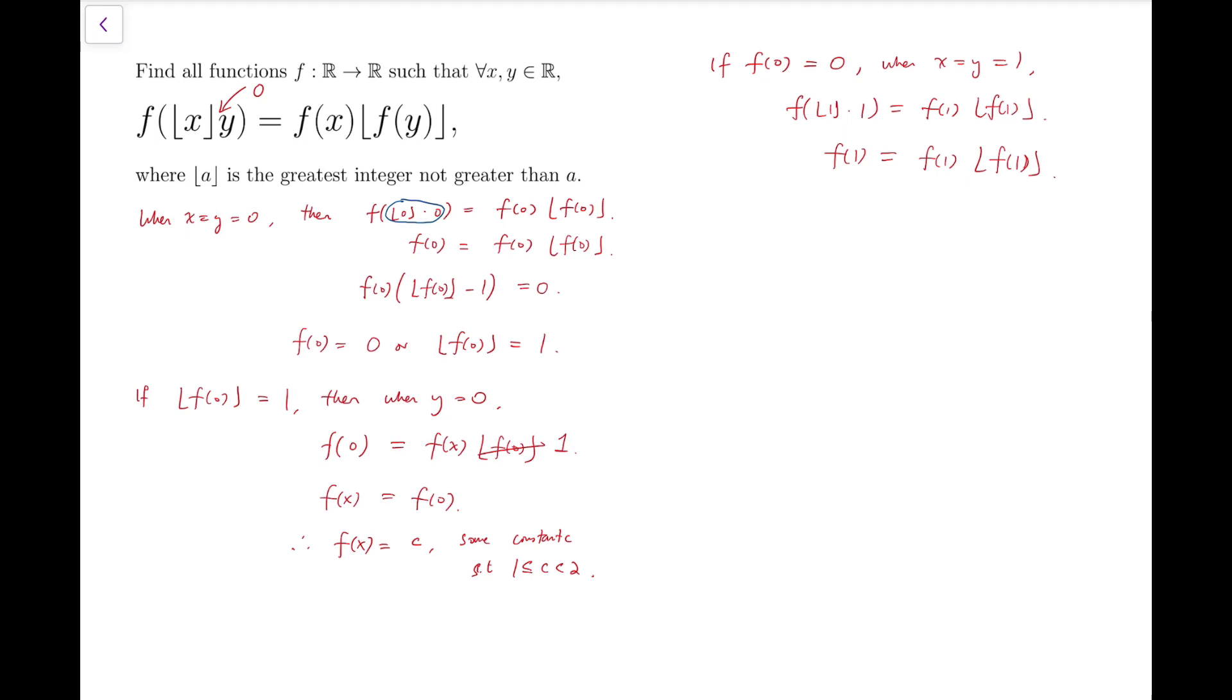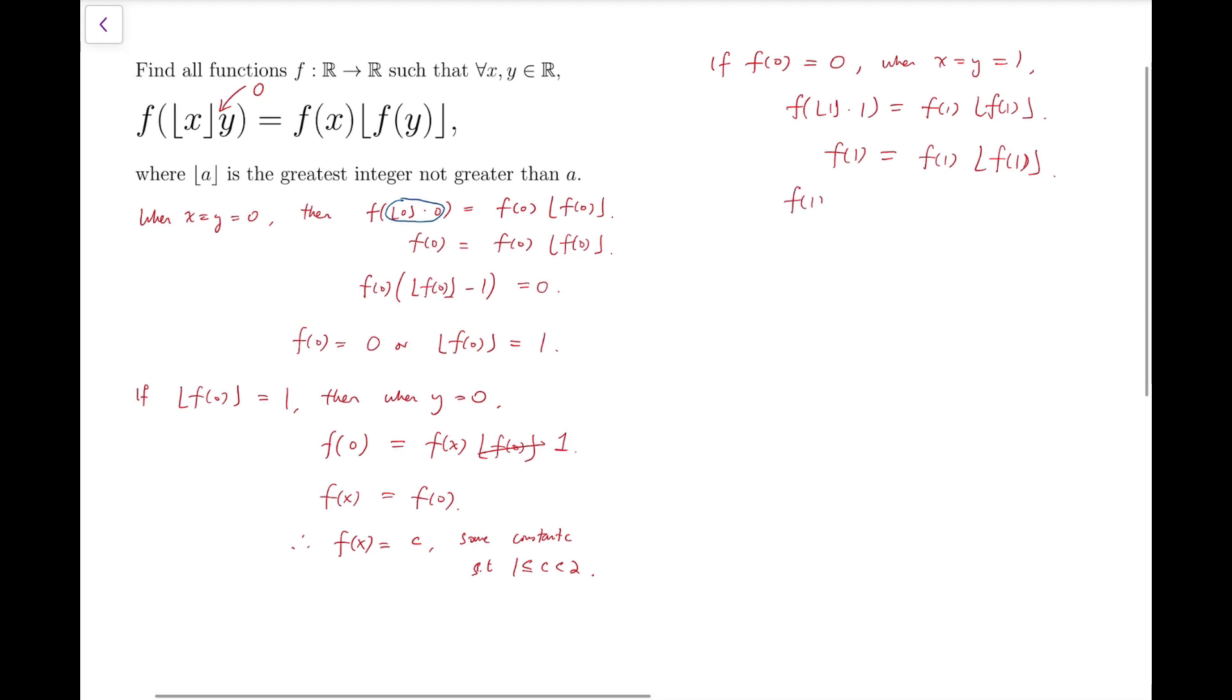f of 1 equals f of 1 times the floor function of f of 1. Again we have a common factor of f of 1, so take it out. And so f of 1 is either 0 or its integral part is 1.